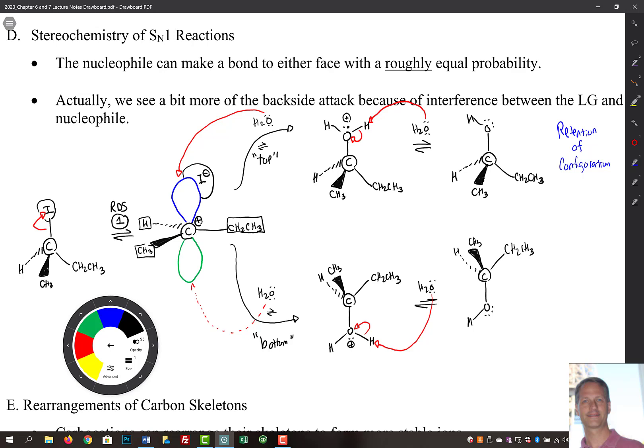Now both of these make H3O plus, but we often omit that. So we call this an inversion of configuration. Here's our inverted product, and here's our retention.